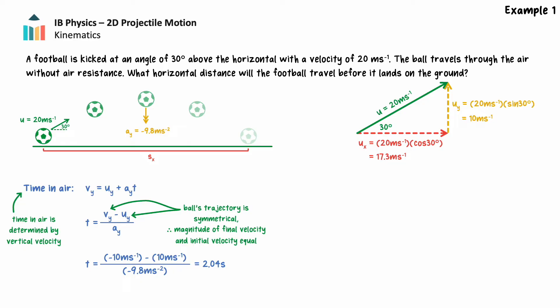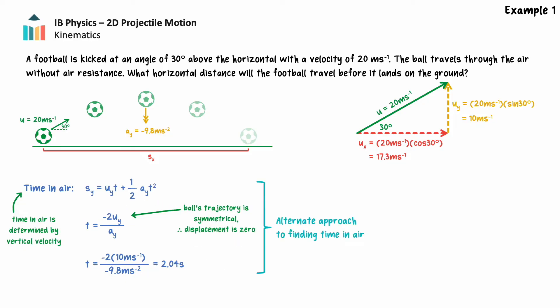Projectile problems often have more than one viable approach to problem solving. Due to the symmetry of the projectile's trajectory, we could also consider the displacement in the vertical direction to solve for time. Because the projectile's initial and final position in the vertical direction are the same, its displacement is zero. We could use the formula s equals ut plus 1/2 at² and solve for time — we would still get the same answer: 2.04 seconds.